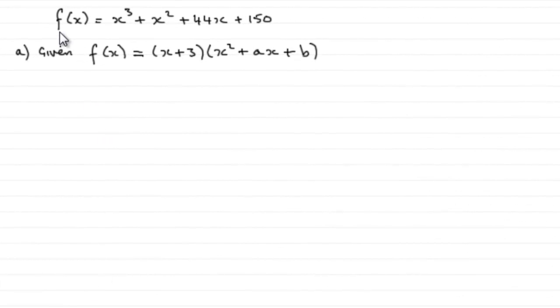In this question, we're given that f(x) equals x cubed plus x squared plus 44x plus 150, and also that f(x) equals (x + 3) multiplied by this quadratic factor x squared plus ax plus b, and we're asked to find out what a and b are.